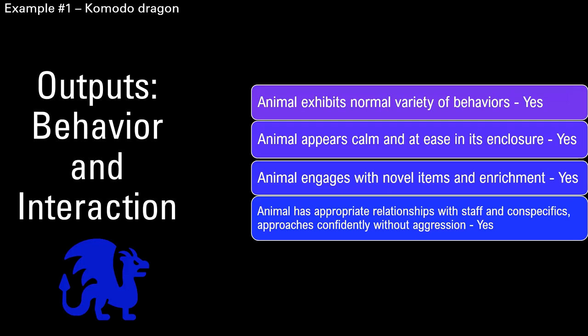The other area of outputs is behavior and interaction. This animal exhibits a normal variety of natural behaviors. It's calm and at ease in its enclosure, engages with novel items and enrichment, and has appropriate relationships with staff. A lot of times captive-raised Komodos are pretty gentle. The males in particular tend to be pretty passive, and if they're comfortable in an enclosure they'll allow you into their space. You usually don't see a lot of aggression unless food is involved.